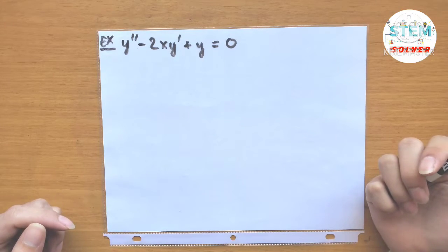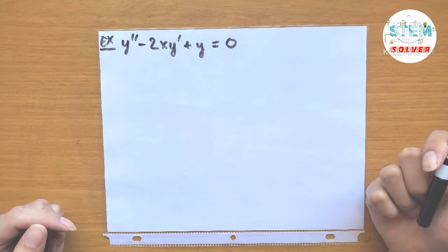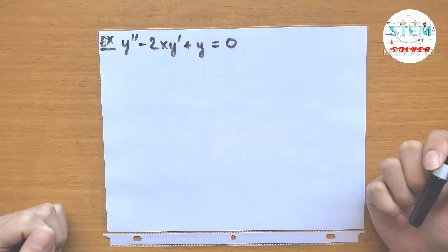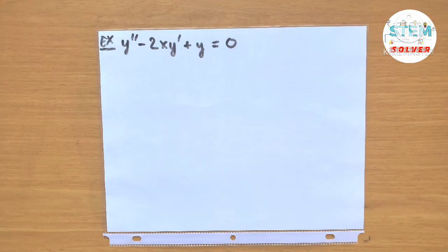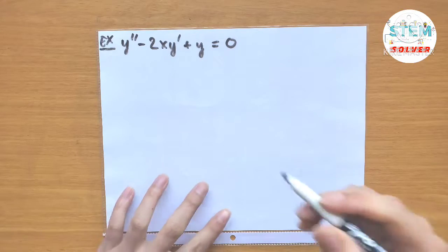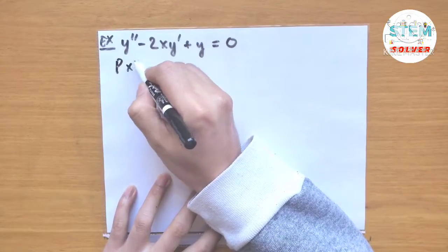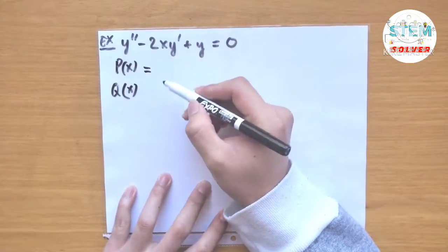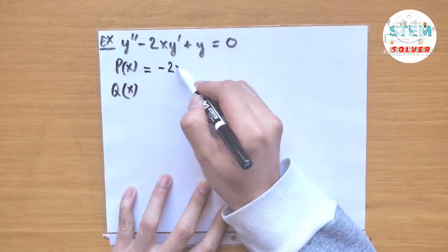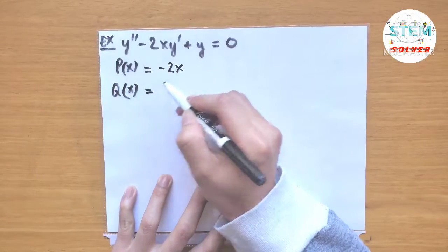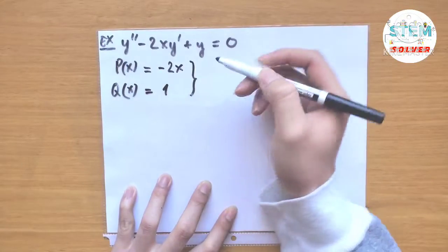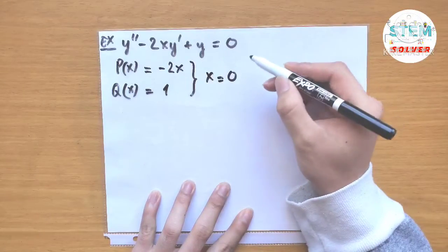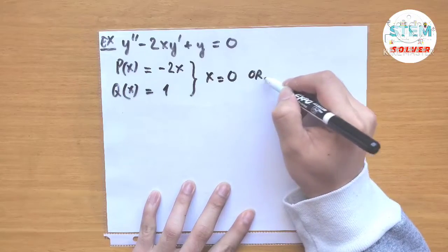Given the equation y double prime minus 2x y prime plus y equals 0, we solve this differential equation using power series. First, let's take a look at p(x) and q(x). So p(x) is equal to negative 2x and q(x) is equal to 1. We can see clearly that x equals 0 is an ordinary point.